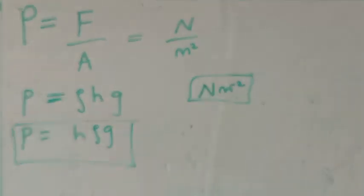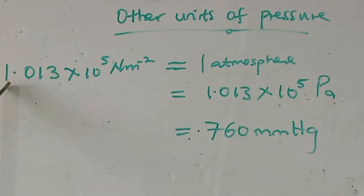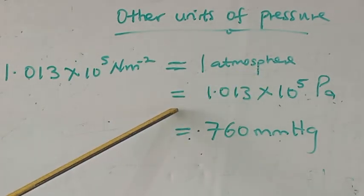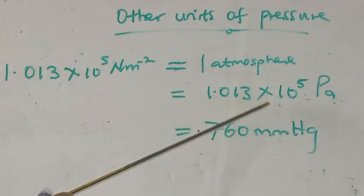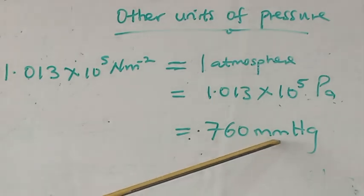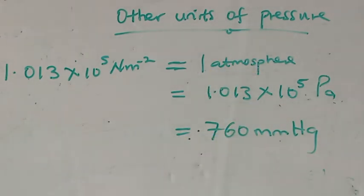Remember, unit is very important in physics. Then other units of pressure are 1.013 raised to the power of 5 newton per meter square is equal to 1 atmosphere, which is also equal to 1.013 raised to the power of 5 pascal. You can also measure pressure in millimeters of mercury in pascal. So these are other units of pressure.